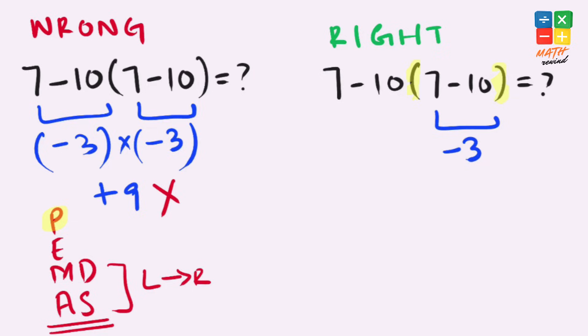Our expression simplifies to 7 minus 10 times negative 3. Now we must solve multiplication first because it has higher priority than subtraction. So we'll solve this part of the expression first.